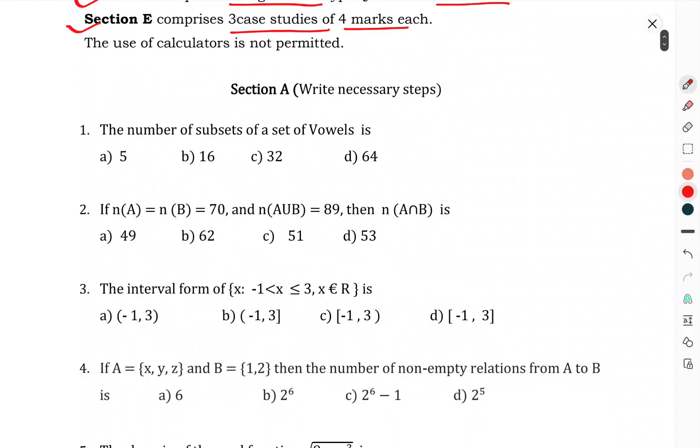Let's see, first of all, Section A. Question 1: The number of subsets of the set of vowels is. Choose the correct option. Question 2: Number of A is N, and number of B equals 70. Then number of A intersection B equals 10. Find A intersection B complement.